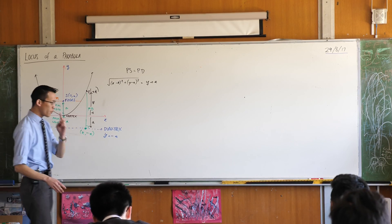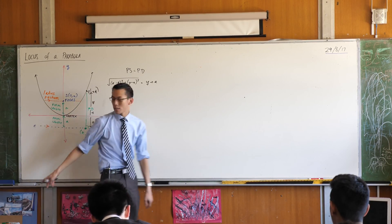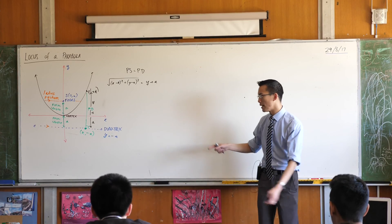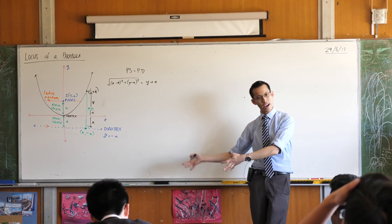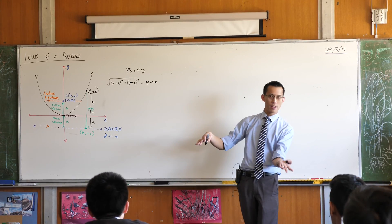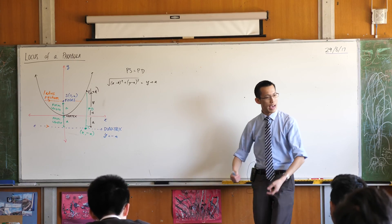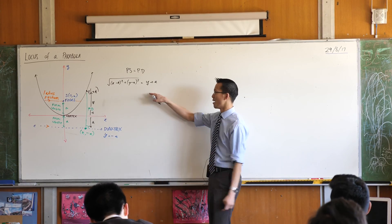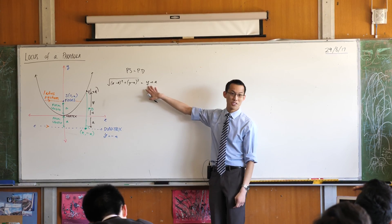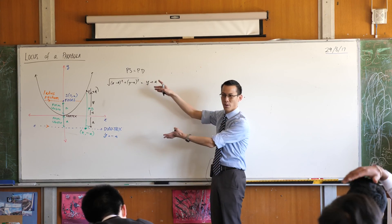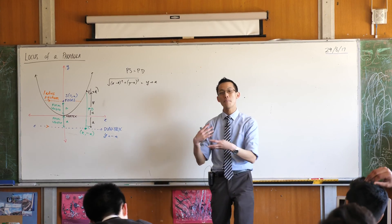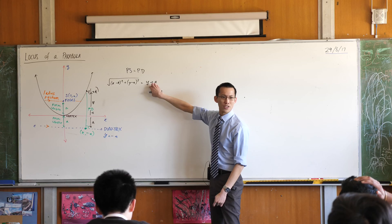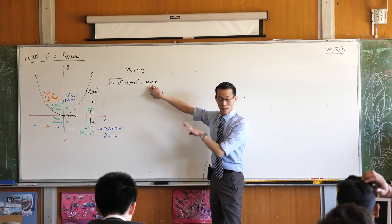It's worth pointing out: if you turned the directrix into general form, it would be 0x plus 1y plus a equals 0. And if you put that into the perpendicular distance formula, lo and behold, eventually you would just get the same result. But that was a nice direct way to think geometrically about what was going on — and much simpler than appealing to a big messy formula.